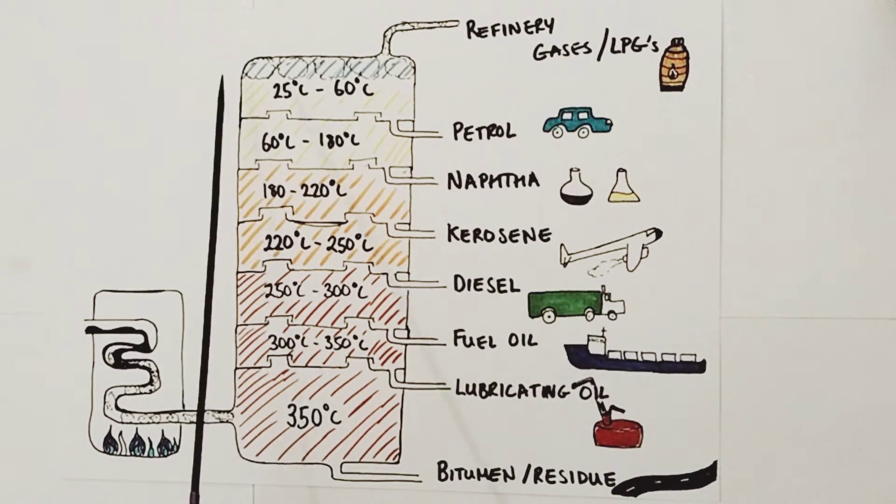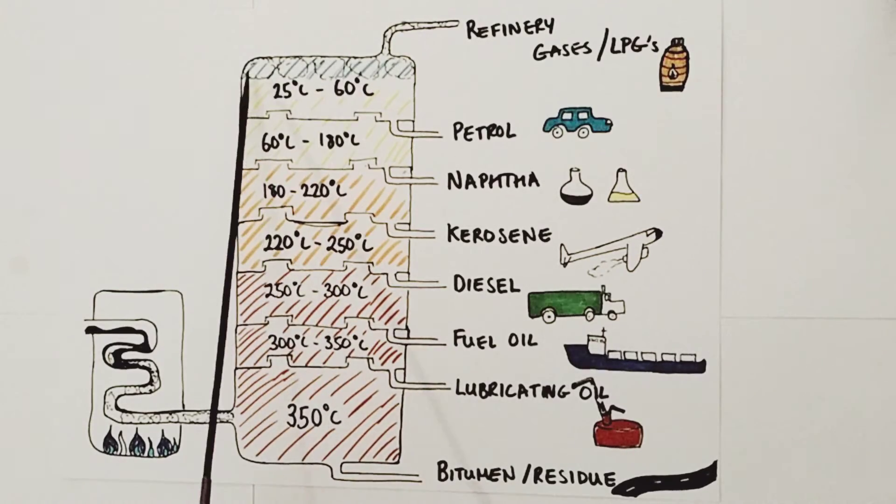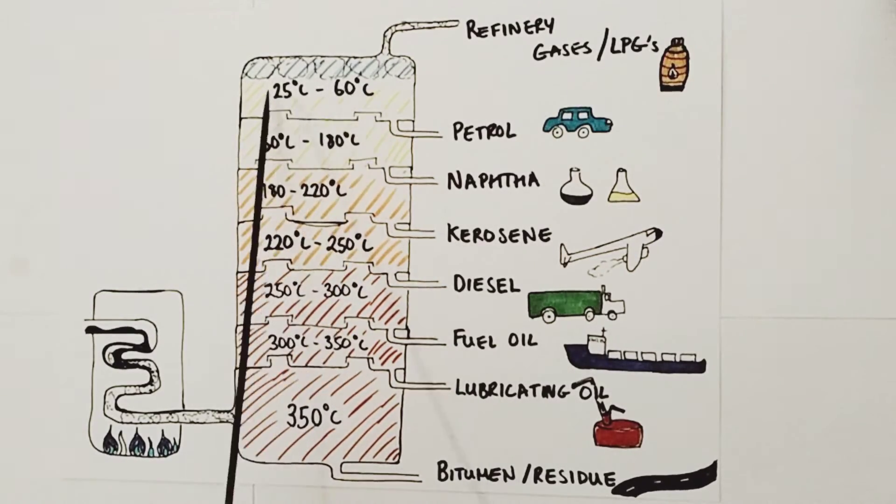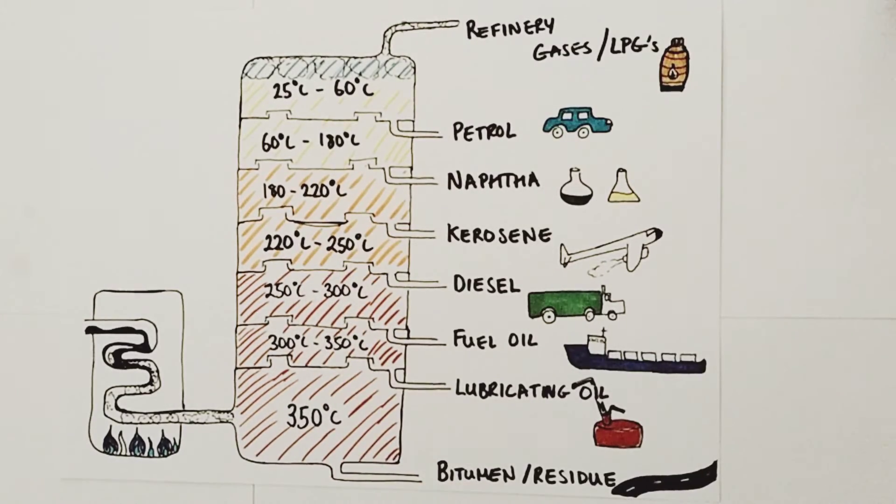Finally, at the very top of the column, we notice these appear to be still in the gaseous state, so they're not condensing at all. They're being tapped off as a gas and collected separately. These are the refinery gases or liquid petroleum gases - the fuels we use in gas canisters for camping heating and cooking purposes.